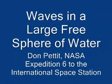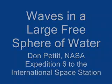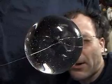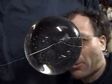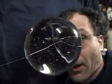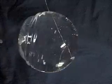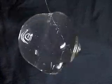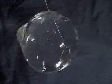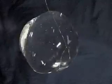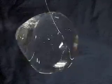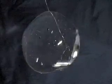Waves in a large free sphere of water. Here we have a large free sphere of water about the size of my head, 130 millimeters in diameter, and we put a puff of air — 10 cc's in 100 milliseconds — radially directed in from the side and look at the resulting waves.